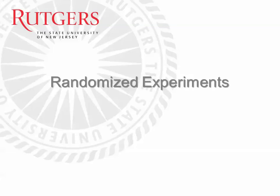Hi everyone. This week we're going to look closely at randomized experiments. A few weeks ago when we began talking about causation, we mentioned intervening in the world or experimentation as a way to get at cause and effect. We made the point generally that there's a difference between intervening in the world and watching the world as an observational study. But now we're going to look at what an experimental study actually looks like.